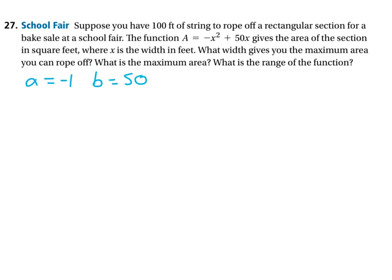Let's find the axis of symmetry. So we can say x equals negative B over 2A, or negative 50 over 2A,